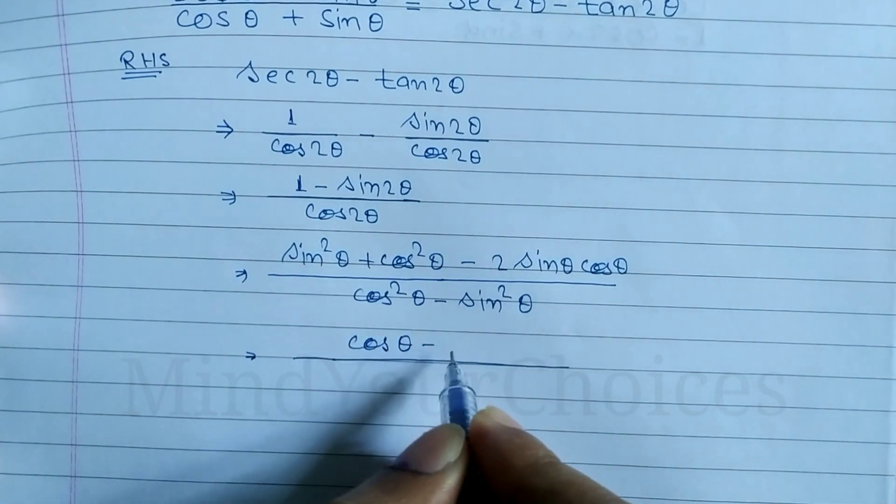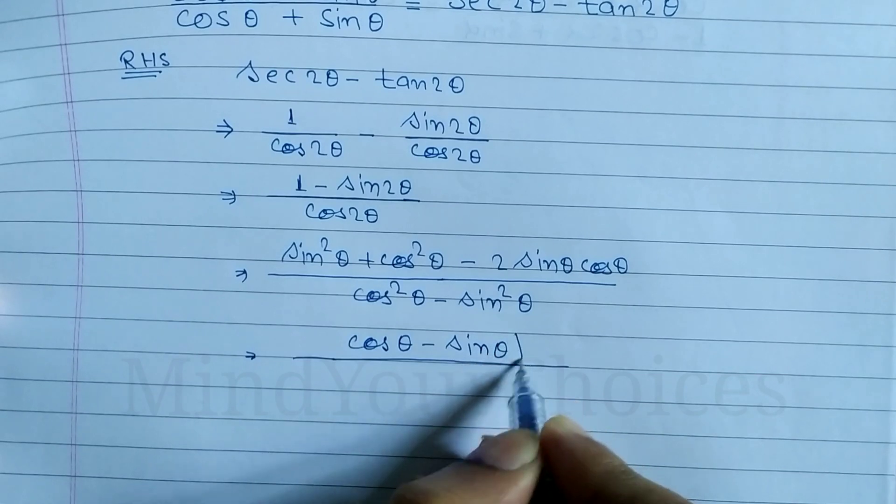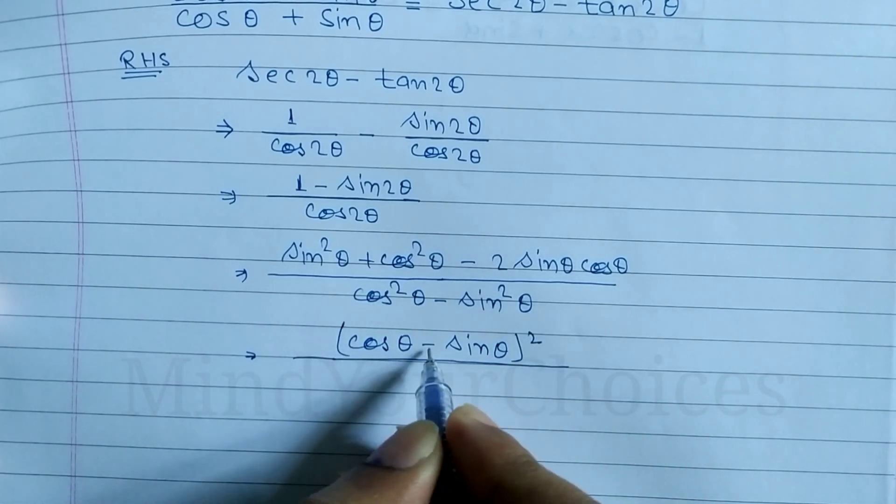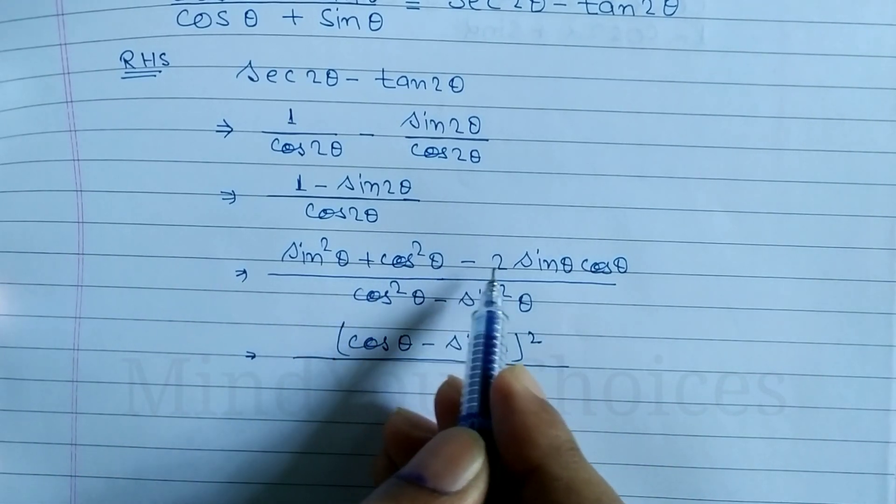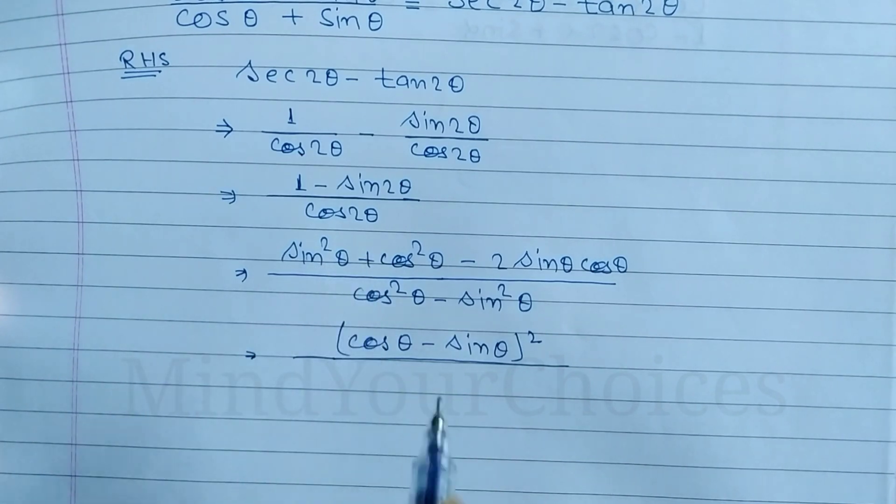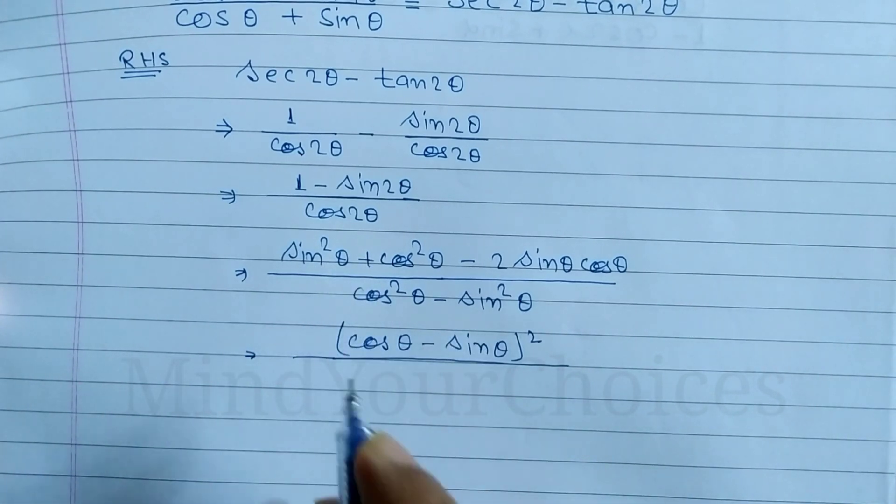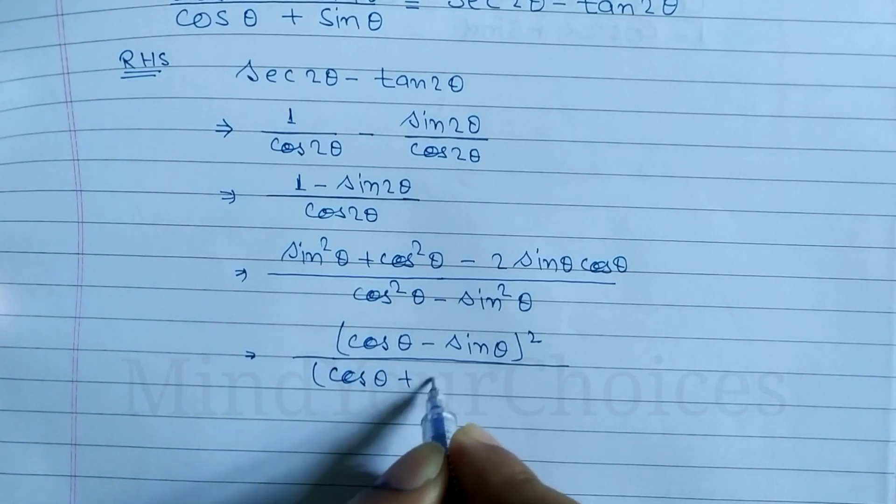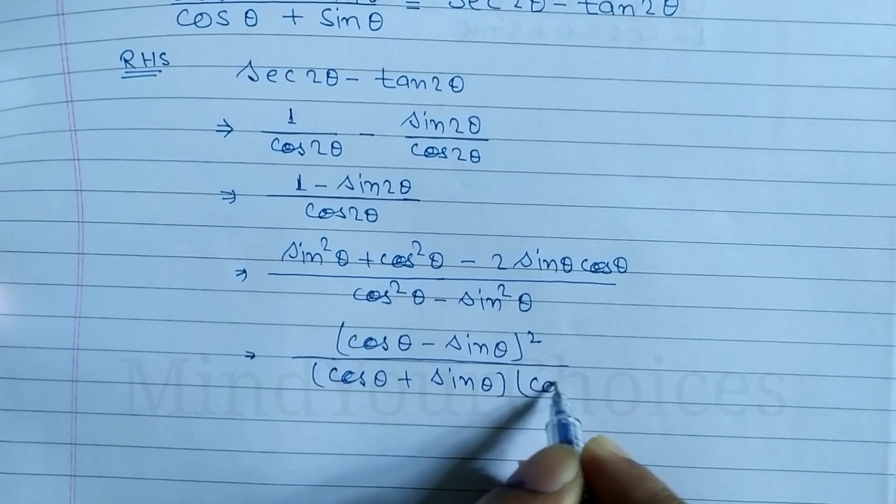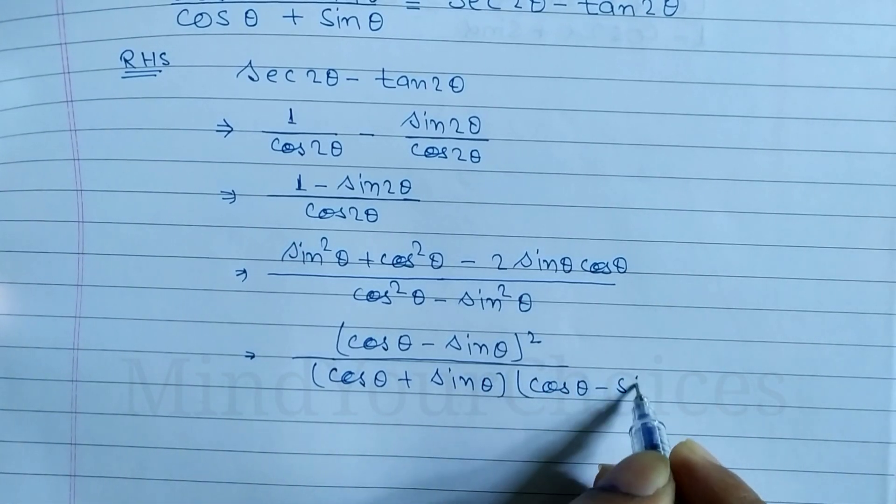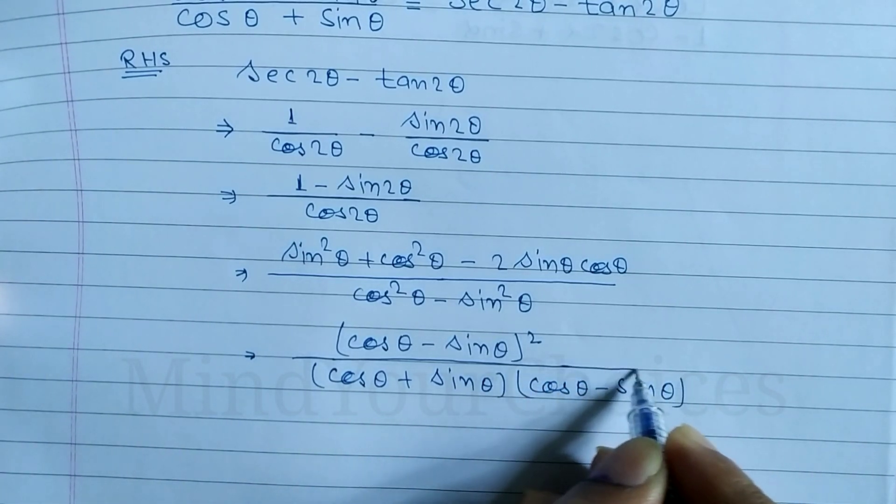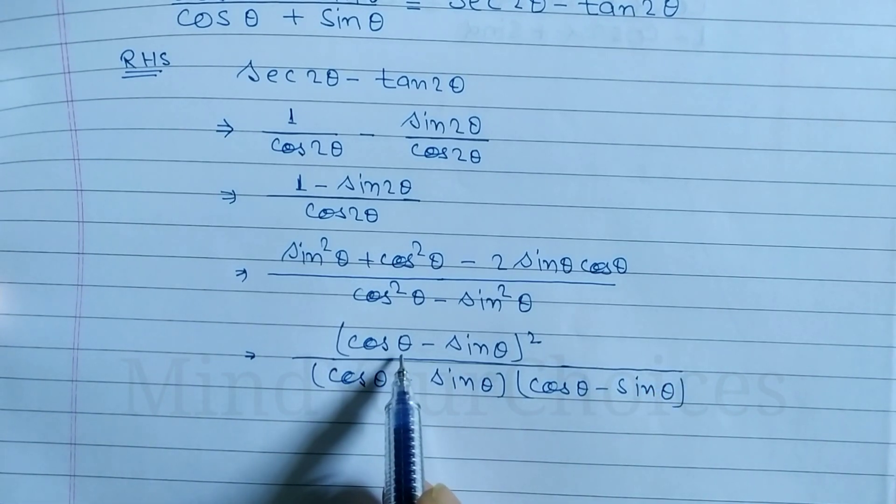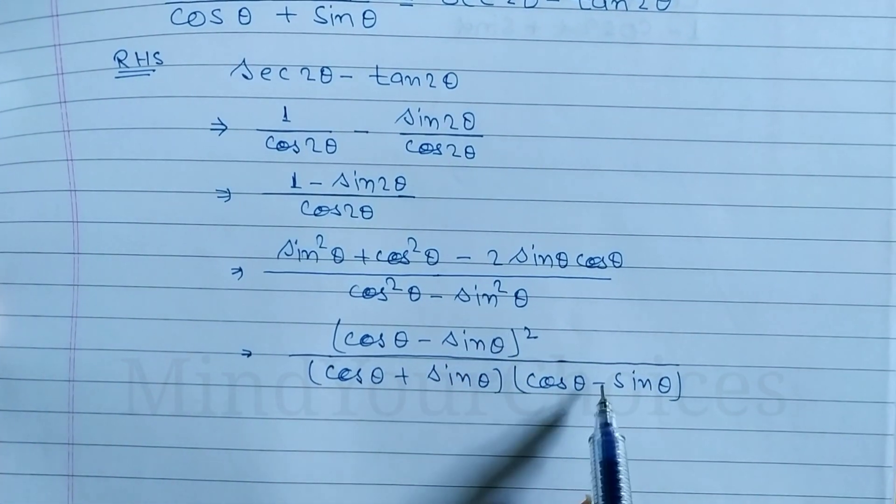We can write this as cos theta minus sin theta whole square. Using a squared minus b squared, we get a plus b times a minus b. So we have cos theta plus sin theta times cos theta minus sin theta.